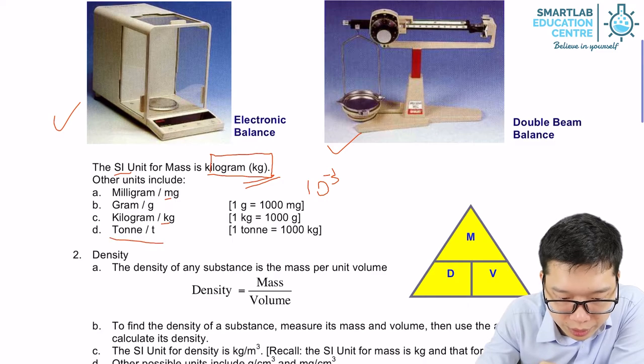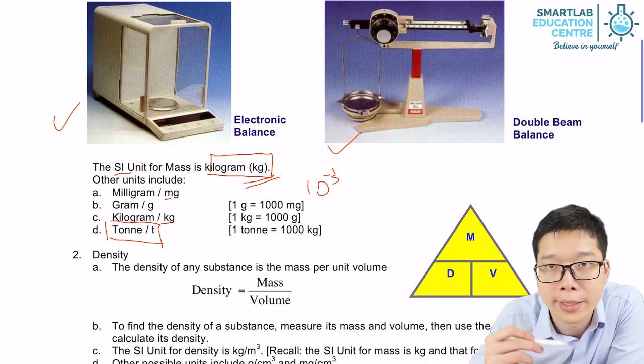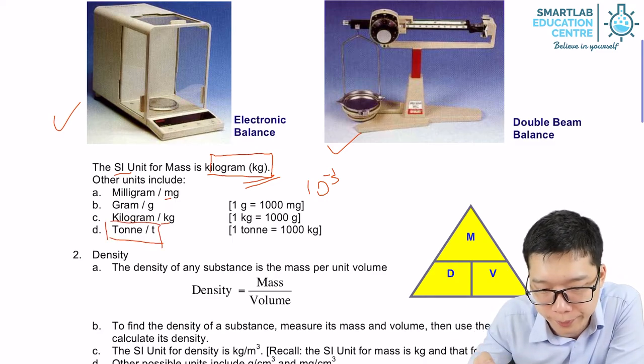And there's a special unit, ton. 1000 kilogram is 1 ton.